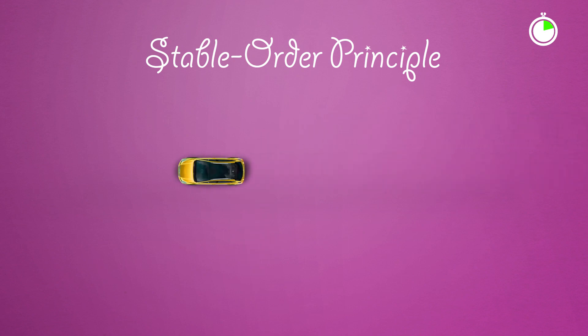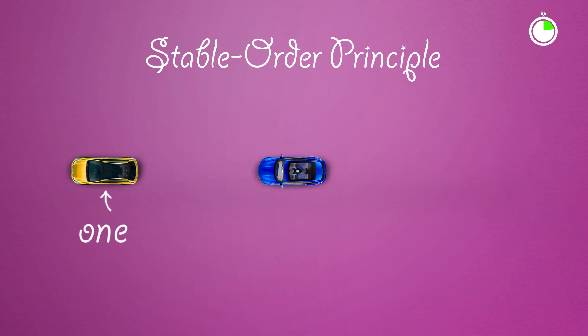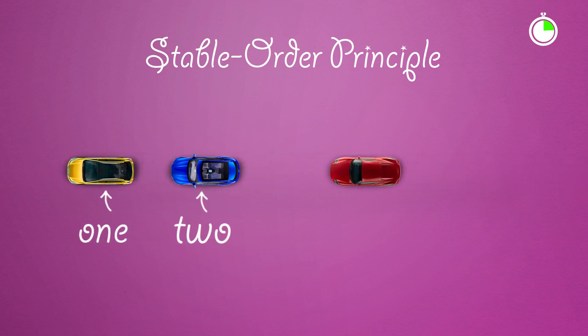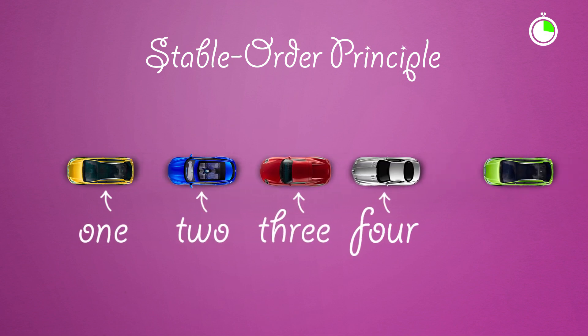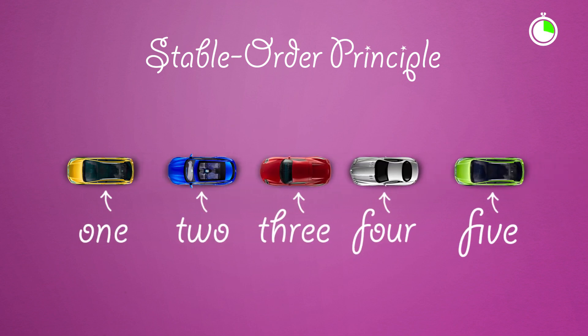How many cars can you see? One, two, three, four, five. Yes, and with practice children learn that this order of number names never changes. It remains stable.